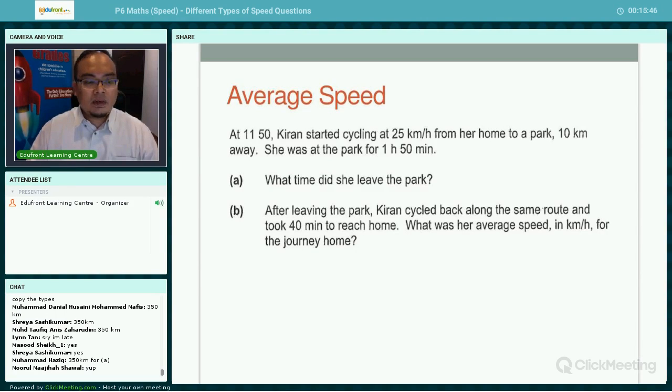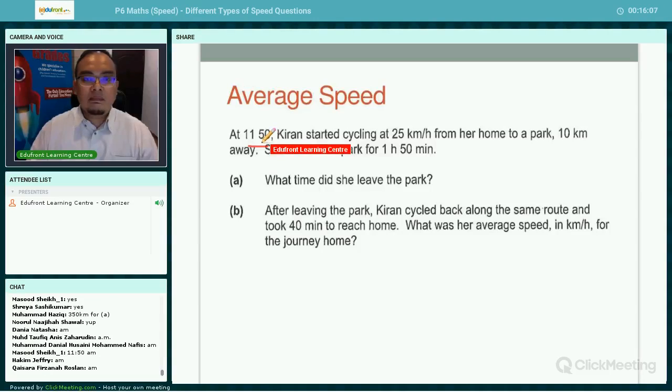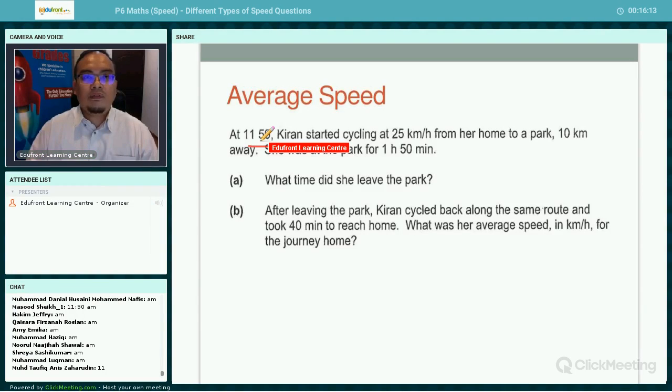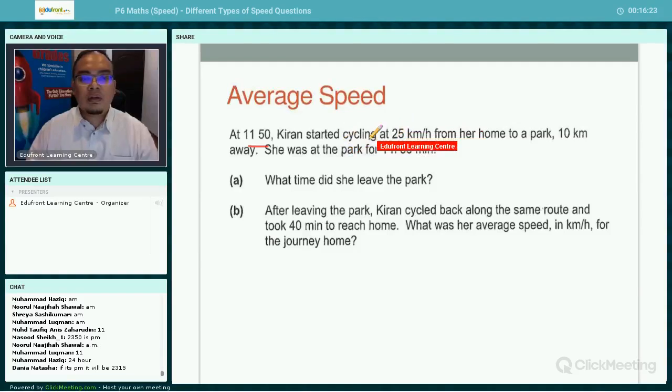This is an average speed question. At 11.50, you'll notice they didn't give you AM or PM. Anyone know if this is AM or PM? How do you know it's AM? This is called a 24-hour clock or 24-hour time, so 11.50 means 11.50 in the morning using the 24-hour clock.